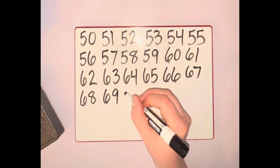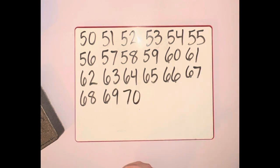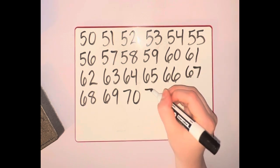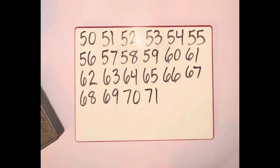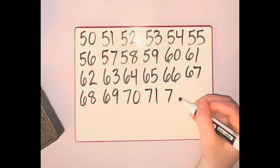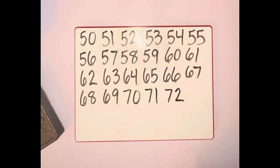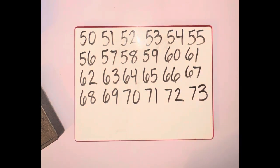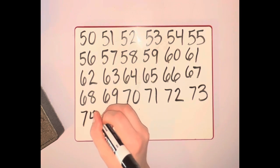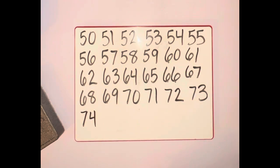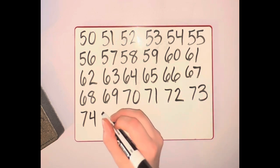70 is 7-0. 71 is 7-1. 72 is 7-2. 73 is 7-3. 74 is 7-4. 75 is 7-5.